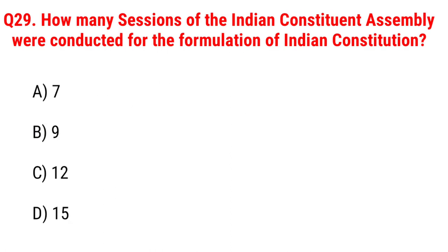Next question: how many sessions of the Indian Constituent Assembly were conducted for the formulation of the Indian Constitution? Option A, 7; B, 9; C, 12; D, 15. The right answer is Option C, 12.